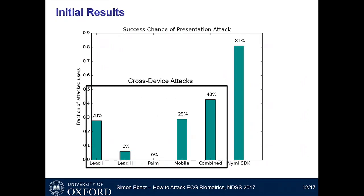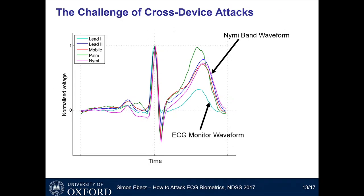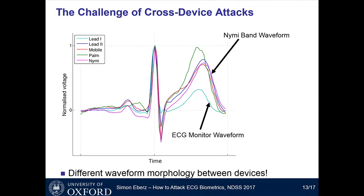To understand why the cross-device attacks underperform, we looked at normalized ECG signals for the same user collected on different devices. The pink line is a waveform collected directly on the NYMI band, following a specific shape, whereas the teal line is a waveform recorded on the ECG monitor. These are simply different waveforms — different amplitudes, waves of different durations — which means the biometric features are also affected, explaining the lower success rate. Different waveform morphologies is the core challenge with cross-device attacks.